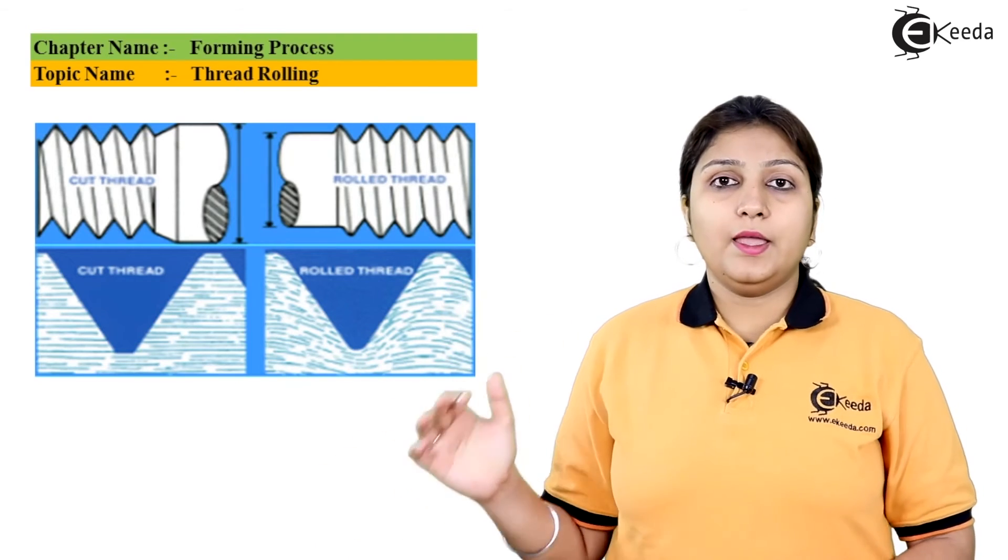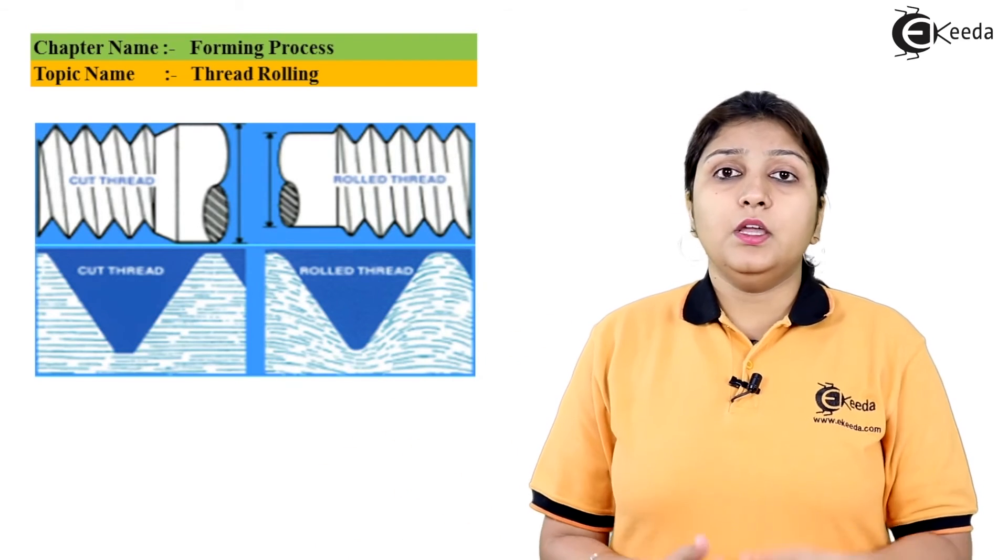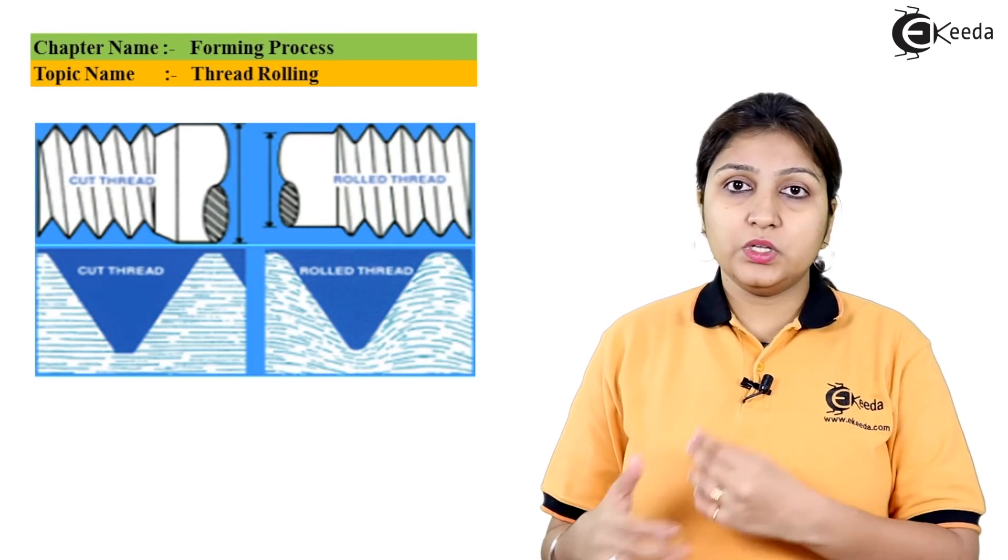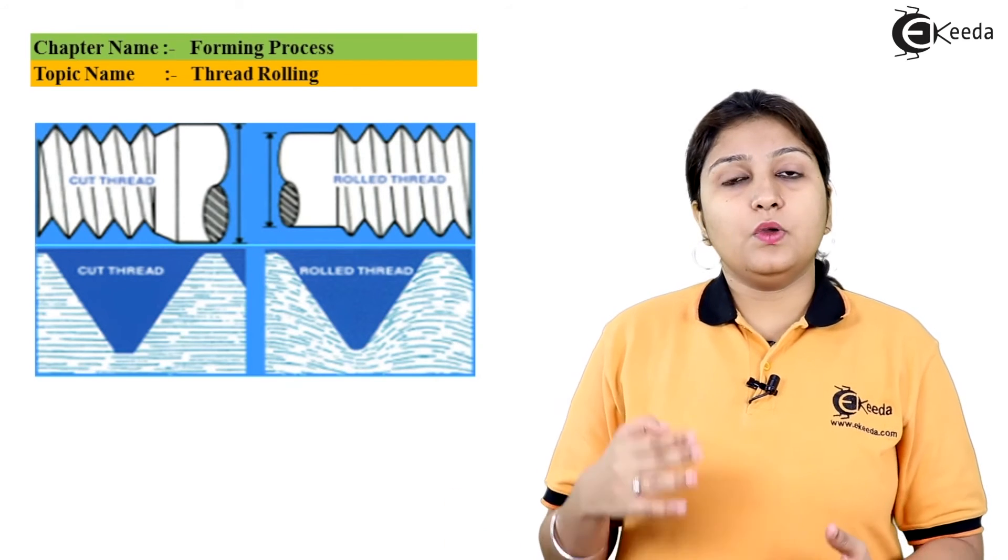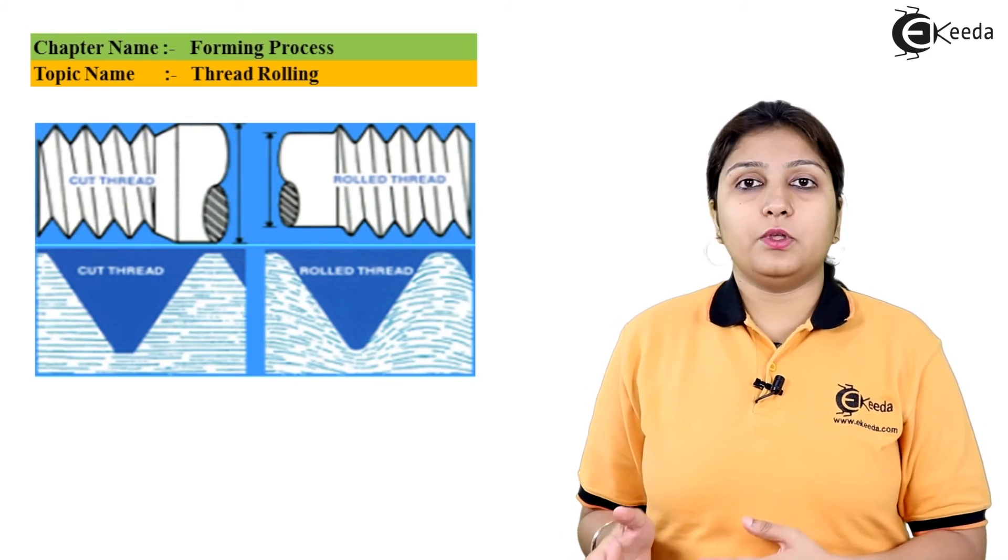And finally, after doing your threading, additional finishing can be done to avoid burrs and sharp edges which are there on your threading. So in this way, your thread rolling process takes place.